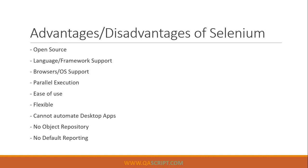The next advantage is language and framework support. It supports a number of different languages — whether you're working on Python, Java, or .NET, you can integrate your language skills with Selenium. Similarly, it supports a number of different frameworks: JUnit, TestNG, Cucumber, and many more, which you can use to build your project and automation tools. For browser and OS support, it supports almost all browsers — Chrome, IE, Firefox, Safari, and many others — making it very effective for cross-browser testing.